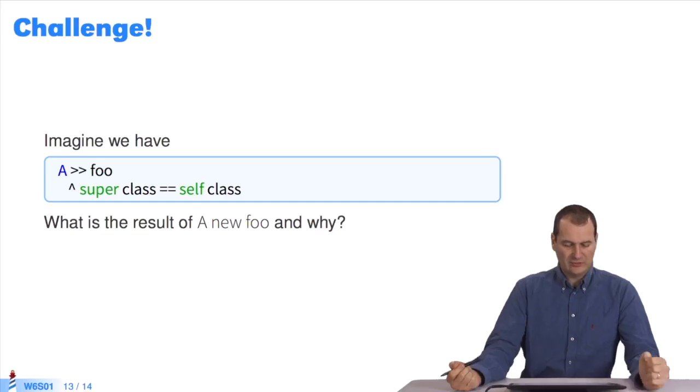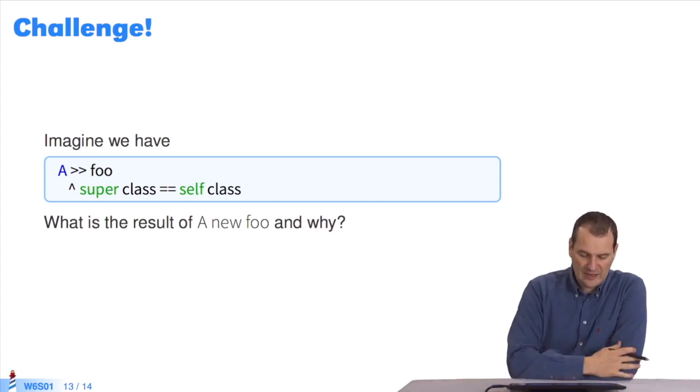I have another problem for you. If you're studying Pharo, you must like challenges. Here we go. Imagine that I have the following problem. The method says, make super class == self class. What does == mean? It's the pointer's identity.